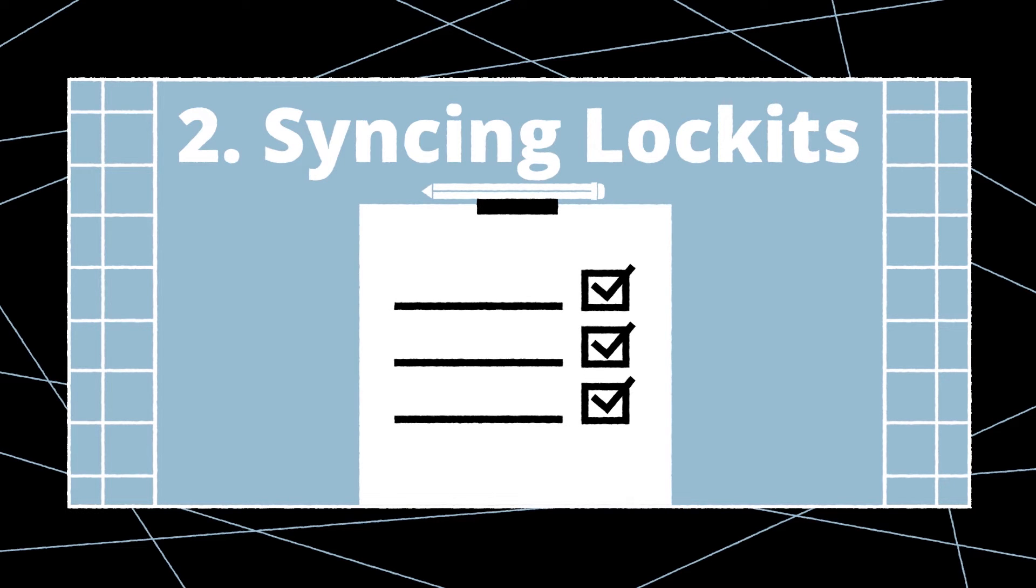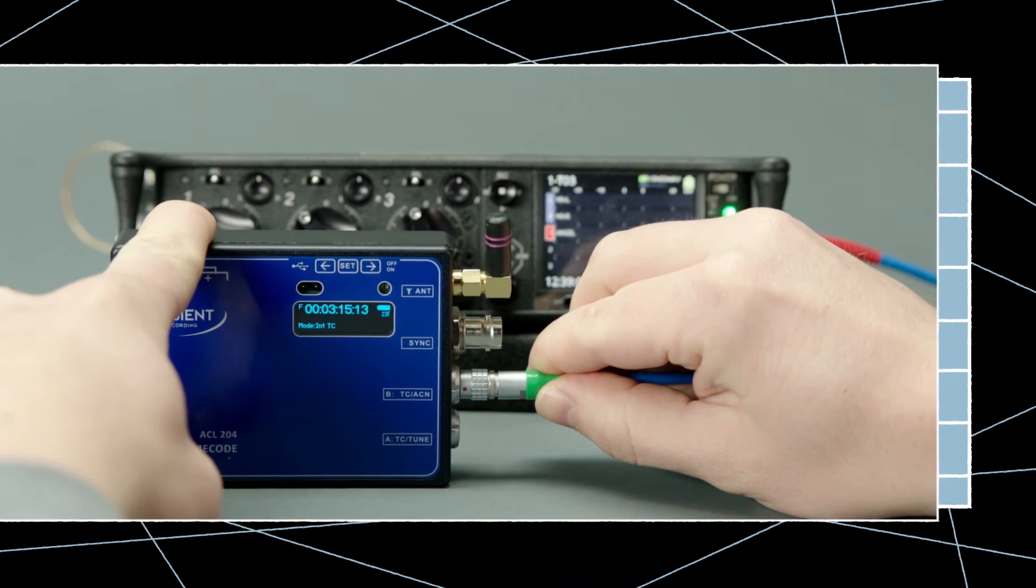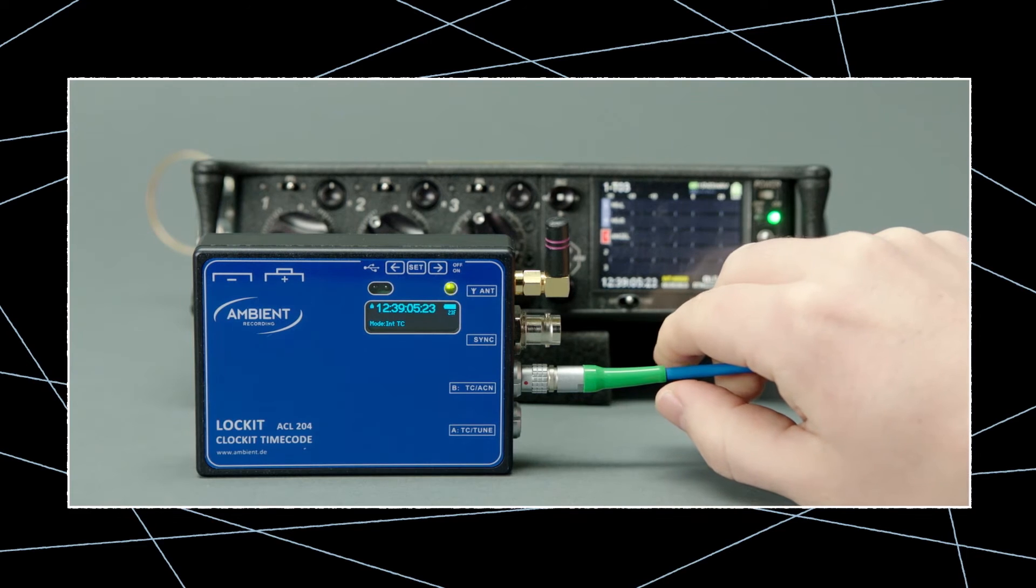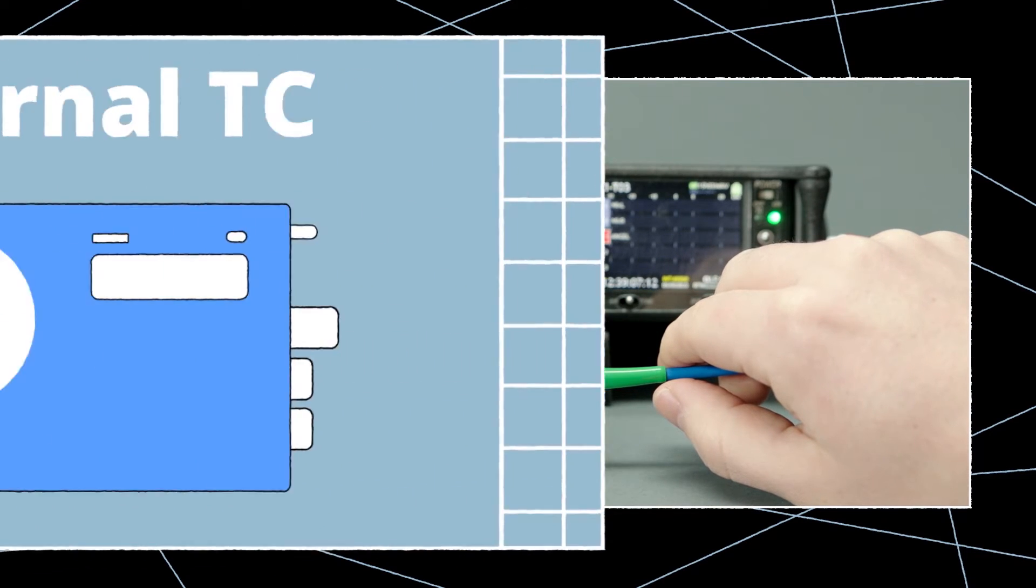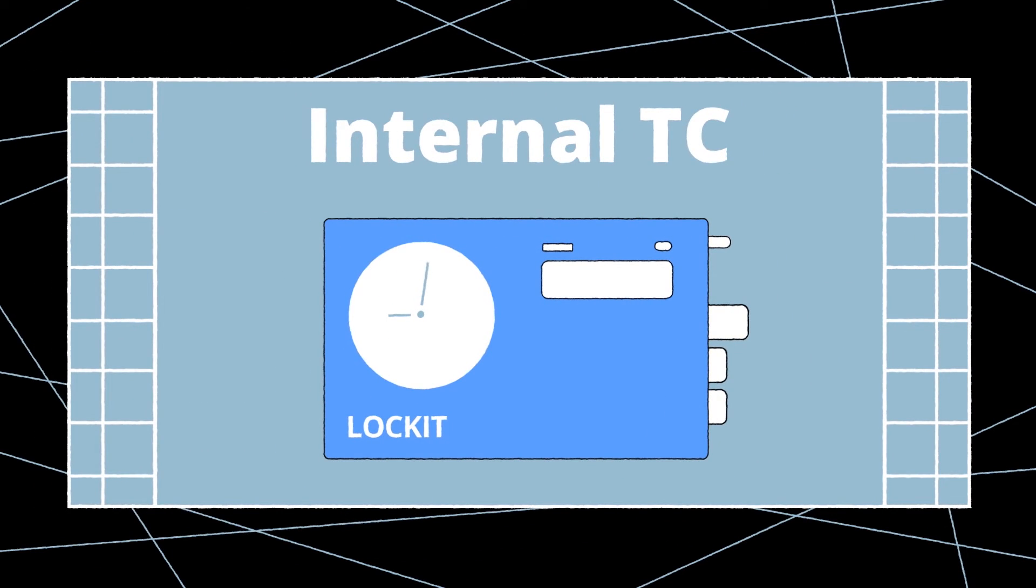Finally, we need to jam-sync our locket boxes. This can be done the old way via cable from our timecode master source if you're using the internal timecode mode. Of course, you should make sure that the source is jammed correctly first.